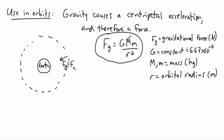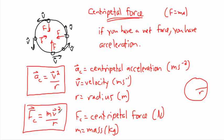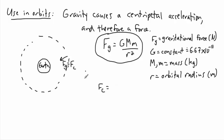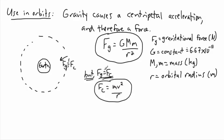R is the orbital radius, normally measured in meters. Now it turns out that if you're going around in a circle, you also have this centripetal force, which we just learned about. The centripetal force is MV squared over R. So Fg equals Fc — this is the key thing. Because the gravitational force is the same as the centripetal force, we can say that GMm over R squared equals MV squared over R.